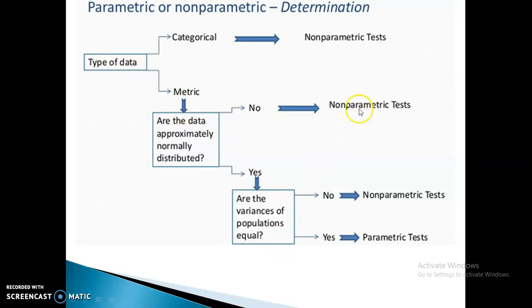But if there is a variation in the variances, which means in certain samples the variance is high and in certain samples the variance is less, it means that there are some outliers. So in that case the data is not normally distributed, which means that we have to go for non-parametric test.